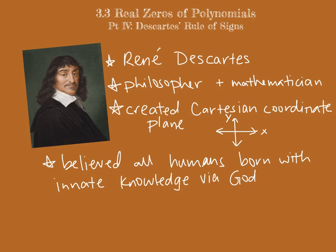Welcome to part four of section 3.3 where we look at Descartes' rule of signs. This is a little bit of a history lesson if anyone's interested — a history lesson from Mrs. Dalmage means I looked at Wikipedia. So this is René Descartes. He was French, born a while ago. In the good old days he could be a philosopher, a mathematician, and also a scientist.